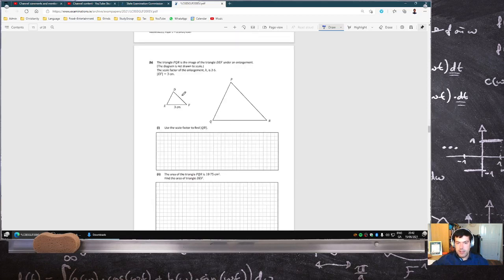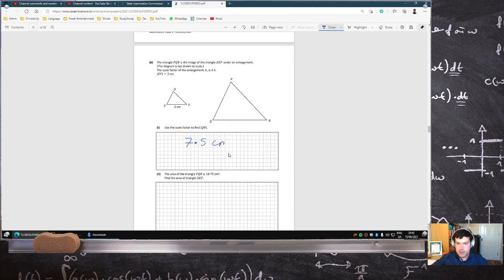The triangle PQR is the image of the triangle DEF under an enlargement. The scale factor is 2.5. Use the scale factor to find QR. It's 2.5 times bigger, isn't it? That would make it 7.5 centimeters.